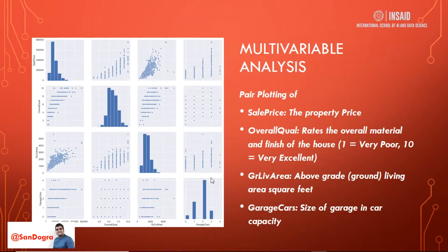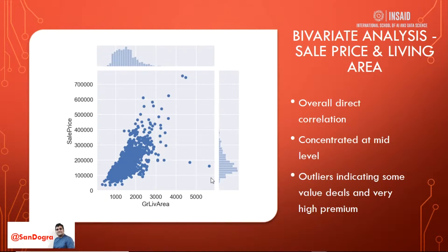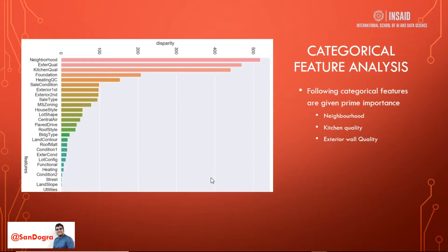We performed multivariate analysis of sale price using pair plots on the top features: overall quality score, ground living area, garage car size, grade levels, and others. We also did bivariate analysis of sale price versus overall quality — the data clearly shows that higher quality score means higher price, a direct correlation. Similarly, sale price versus living area is highly correlated, concentrated in the middle segment, with some outliers representing premium deals.